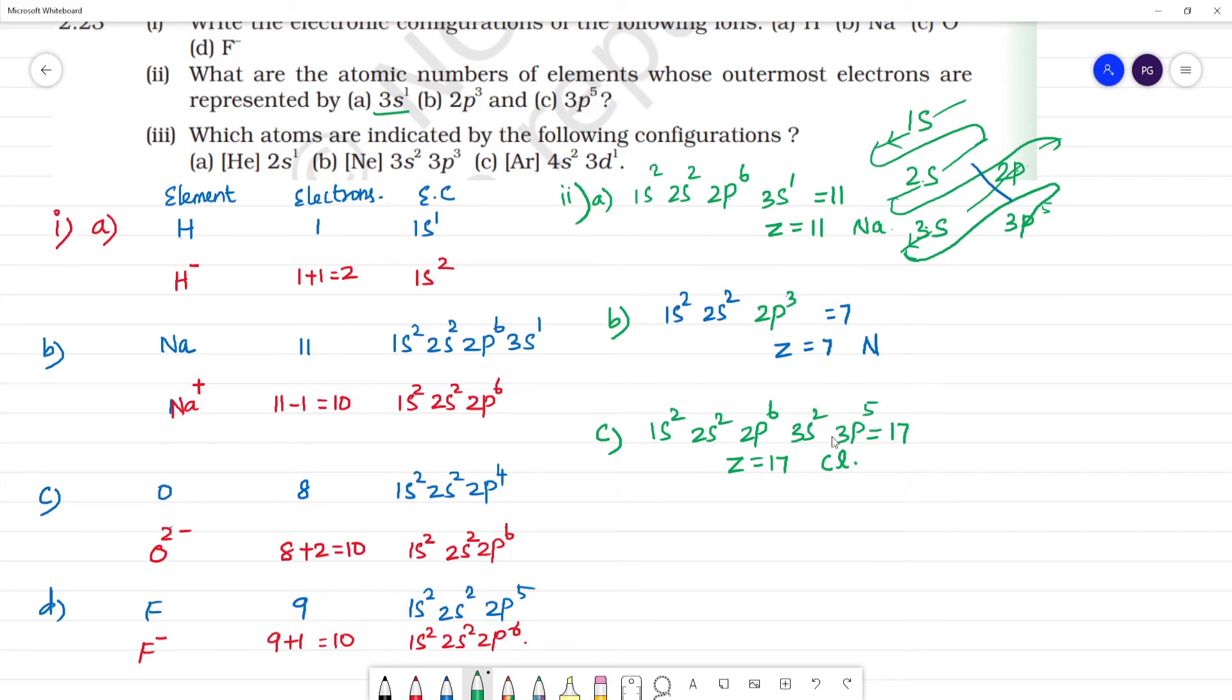So the representation is z equals 7, 11, and 17. Third question: which atoms are indicated by the following configurations?